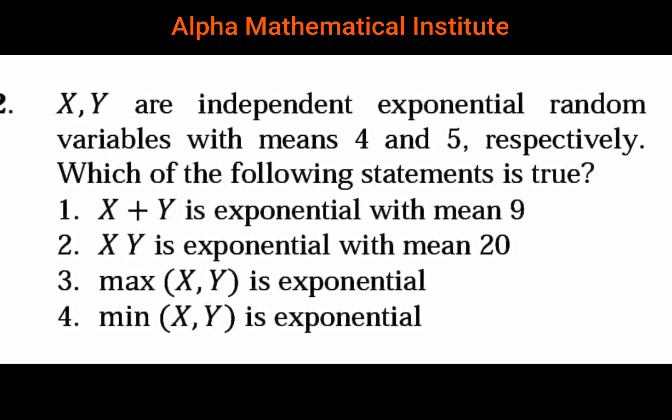X and Y are independent exponential random variables with means 4 and 5 respectively. Which of the following statements is true? First statement: X plus Y is exponential with mean 9. Second: X times Y is exponential with mean 20. Third: maximum of X, Y is exponential.